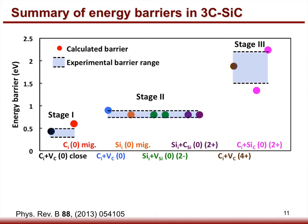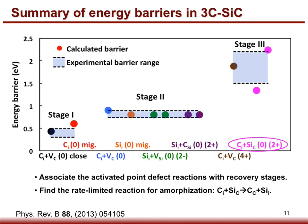We summarized the energy barriers of the four defect annealing reactions as well as migration barriers of interstitials, and mapped them onto the three experimental recovery stages. As shown in this figure, the dots represent the calculated rate-limiting energy barriers and the shaded areas mark the experimental barrier ranges. Through this comparison, we associate the activated point defect reactions with recovery stages, and find the rate-limiting reaction for amorphization: the carbon interstitial kicks out the silicon antisite and forms a silicon interstitial. Since this reaction corresponds to the third recovery stage, which occurs just before amorphization, this mechanism may set the critical temperature for amorphization.